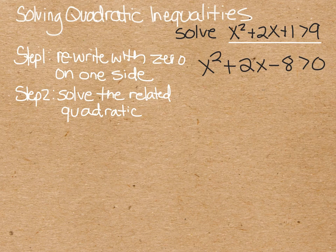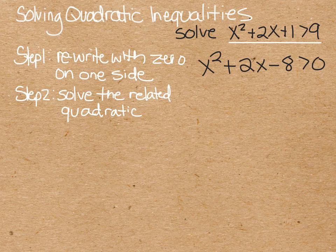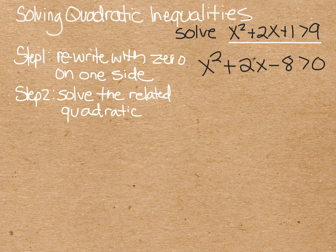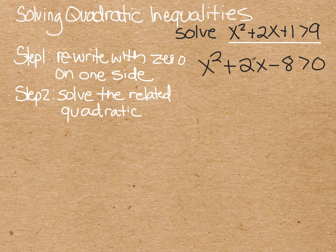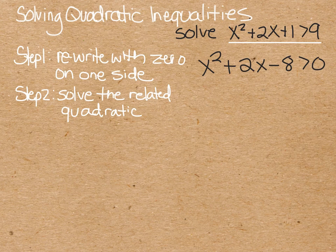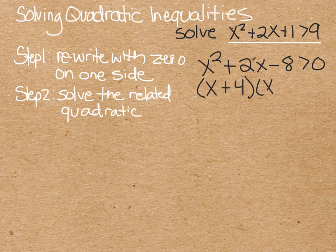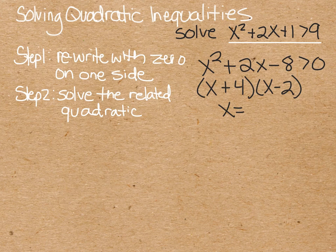After you've done that, we're going to solve the related quadratic. So if this were equal to 0, you would solve it. You can use whatever method you have. You could use factoring or quadratic formula or you could use completing the square. Whatever you like best. This one happens to factor nice and pretty. So we have x plus 4 and x minus 2, giving us zeros of x equals negative 4 and positive 2.